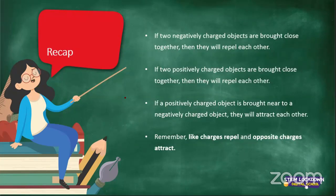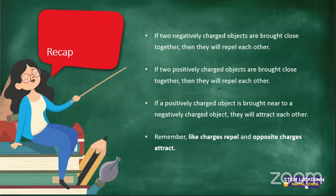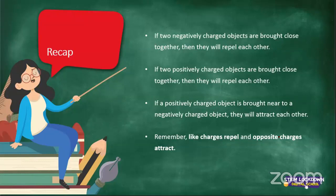To recap yesterday's lesson: if two negatively charged objects are brought close together, they repel each other. If two positively charged objects are brought close together, they also repel each other. If a positively charged object is brought near to a negatively charged object, they will attract each other. The most important thing to remember is that like charges repel and opposite charges attract.